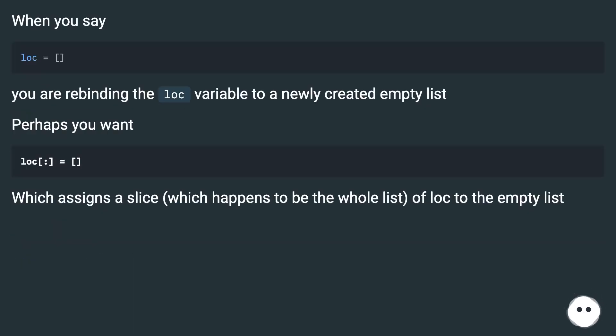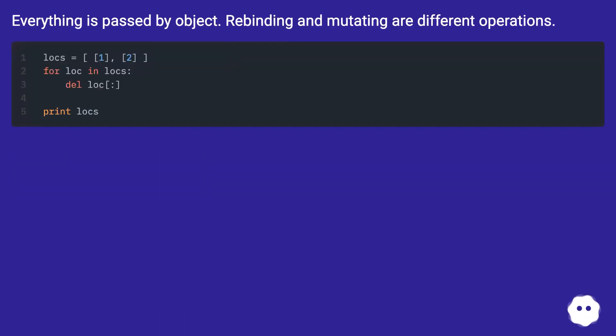When you say loc equals empty list, you are rebinding the loc variable to a newly created empty list. Perhaps you want loc slice equals empty list, which assigns a slice (which happens to be the whole list) of loc to the empty list. Everything is passed by object. Rebinding and mutating are different operations.